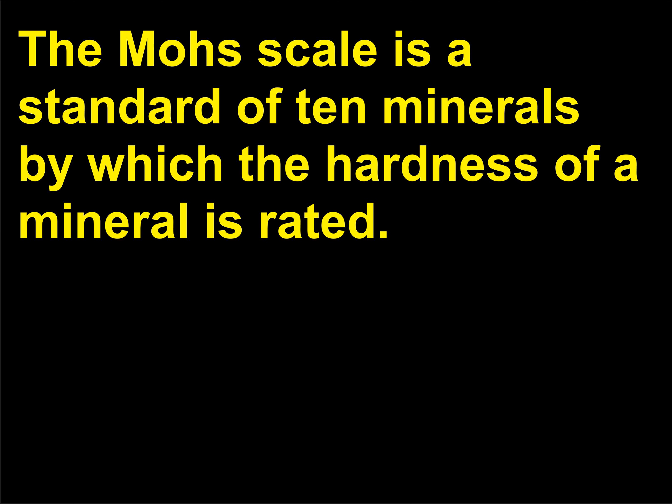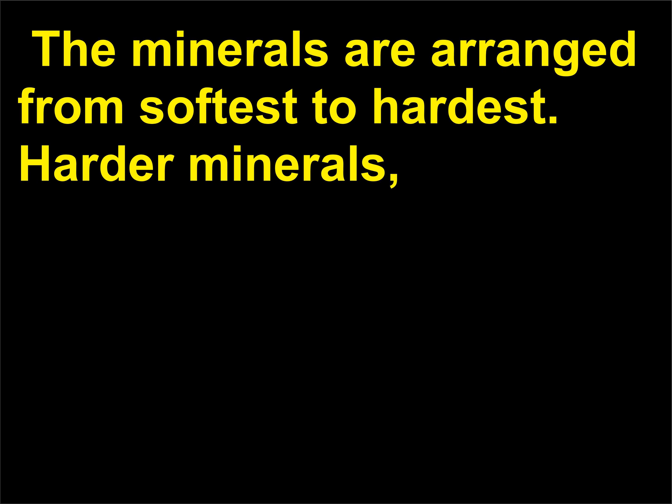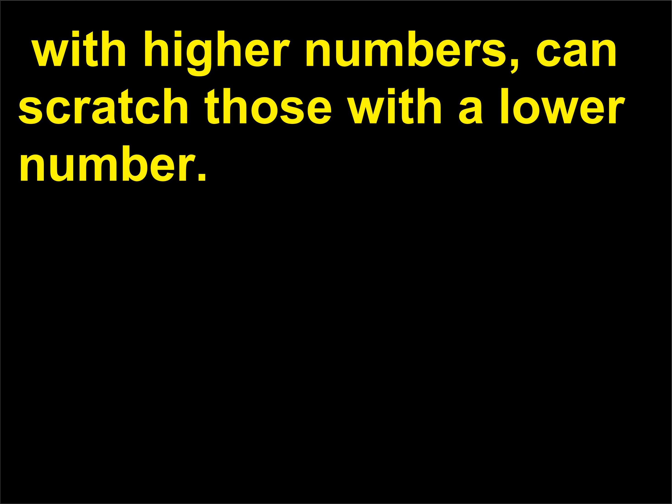What is the Mohs scale? The Mohs scale is a standard of 10 minerals by which the hardness of a mineral is rated. It was introduced in 1812 by the German mineralogist Friedrich Mohs (1773–1839). The minerals are arranged from softest to hardest; harder minerals with higher numbers can scratch those with a lower number.